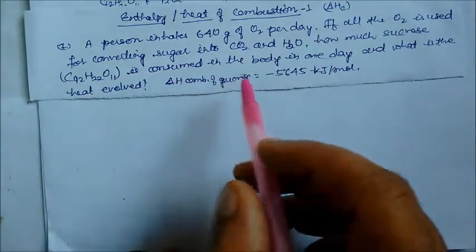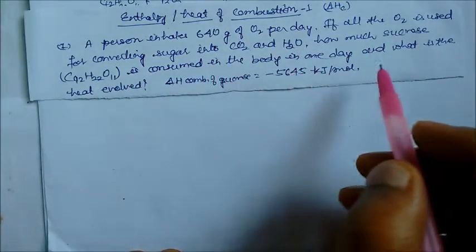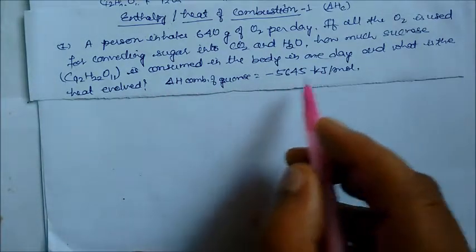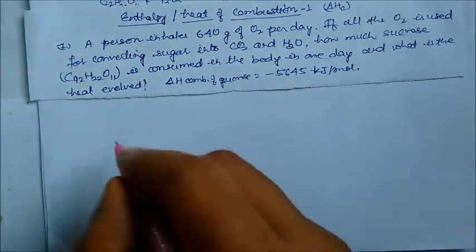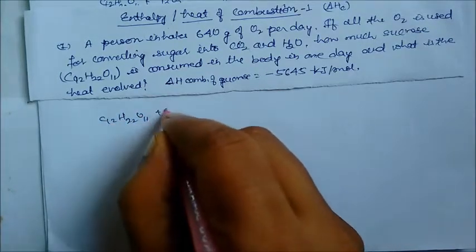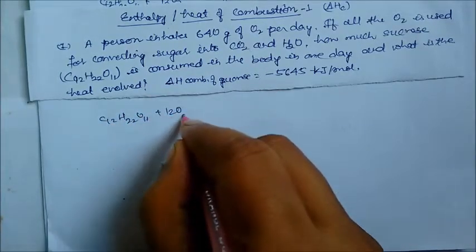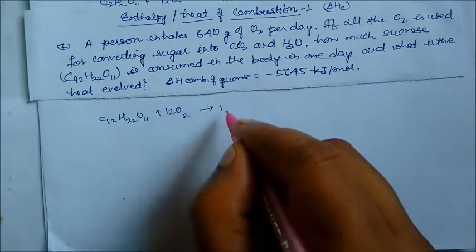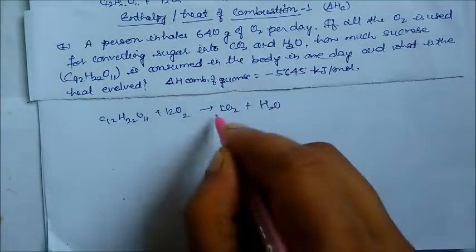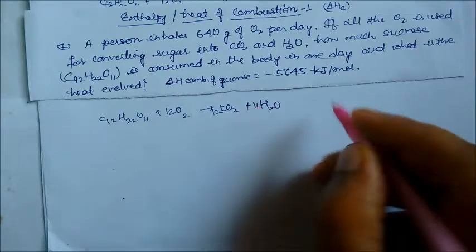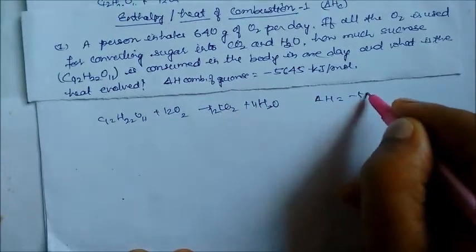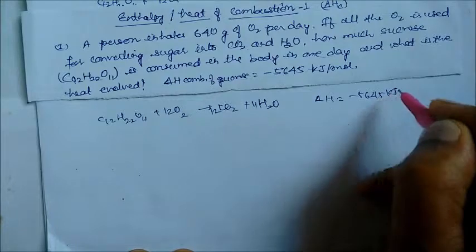How much sucrose is consumed in the body in one day and what is the heat reward? The delta heat of combustion of sucrose is written as: C12H22O11 plus 12 molecules of oxygen gives carbon dioxide plus water. Balancing the equation gives 11 molecules of water, and delta H is minus 5645 kilojoule.